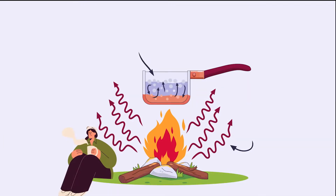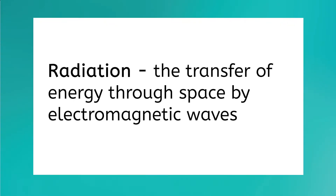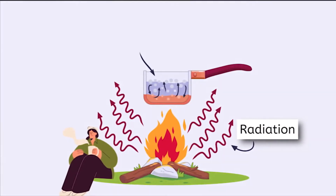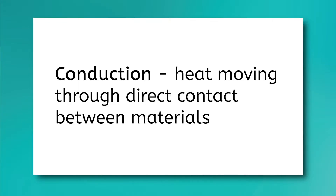You probably noticed the crackling fire, the hot chocolate in my hand, and the pot of hot water over the fire. The hot fire is warming my face, even though I'm not touching it. This is called radiation — the transfer of energy through space by electromagnetic waves. This mug of hot chocolate is warming my hands. I'm not directly touching the hot liquid, but the heat is transferred through the ceramic mug.